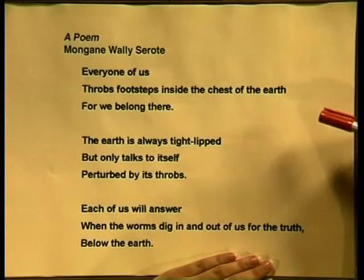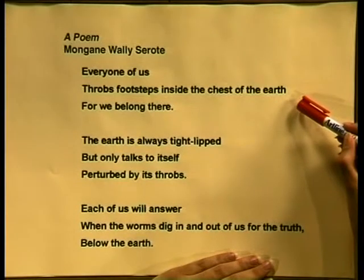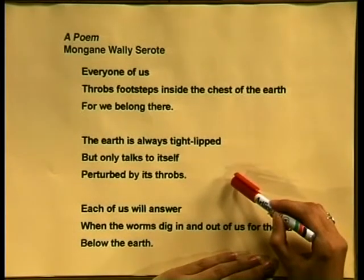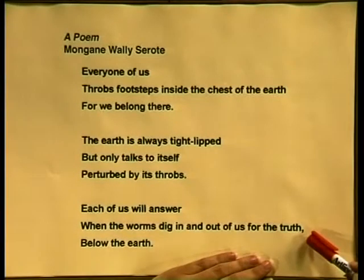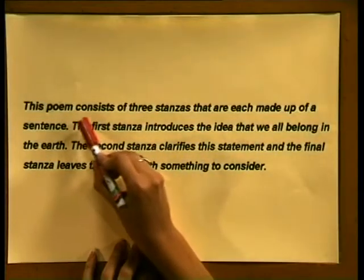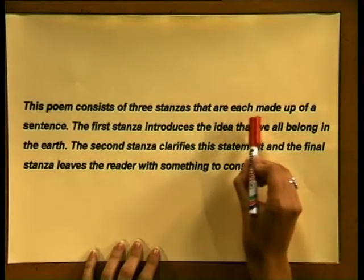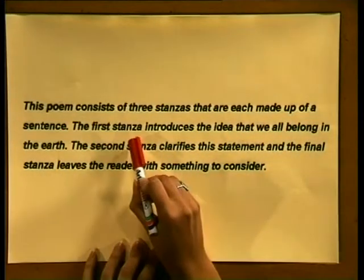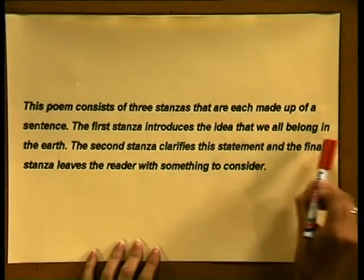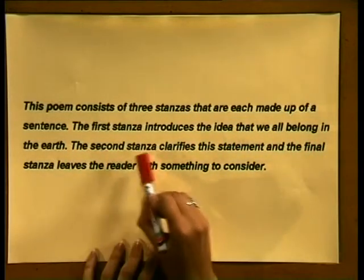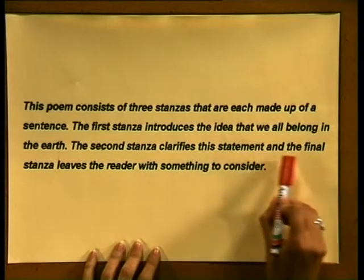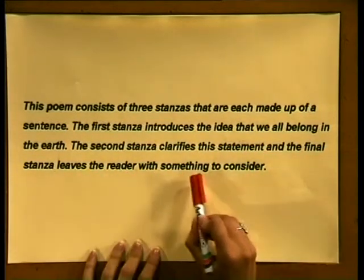If we look at the content of each stanza, we notice that the poet makes a statement in stanza one, clarifies his statement in stanza two, and leaves the reader with a thought in stanza three. So if asked to comment on the structure in a test or exam, your answer could be: This poem consists of three stanzas each made up of a sentence. The first stanza introduces the idea that we all belong in the earth. The second stanza clarifies this statement, and the final stanza leaves the reader with something to consider.